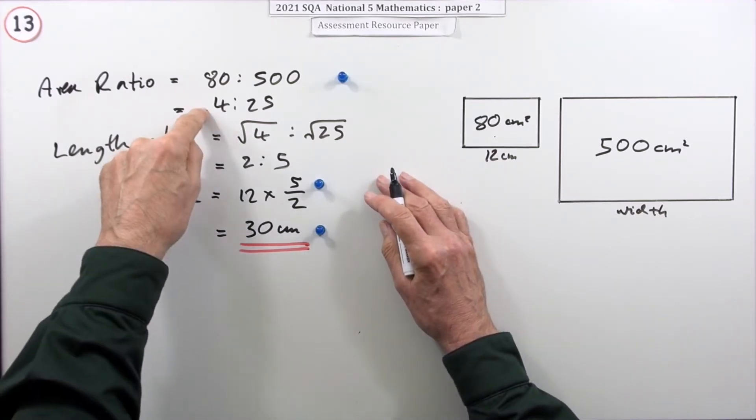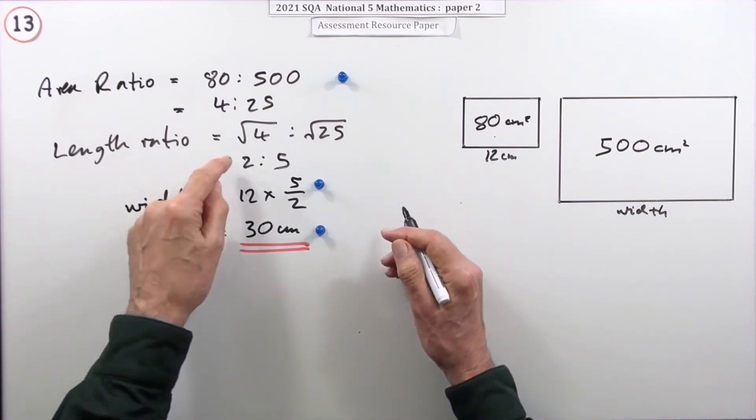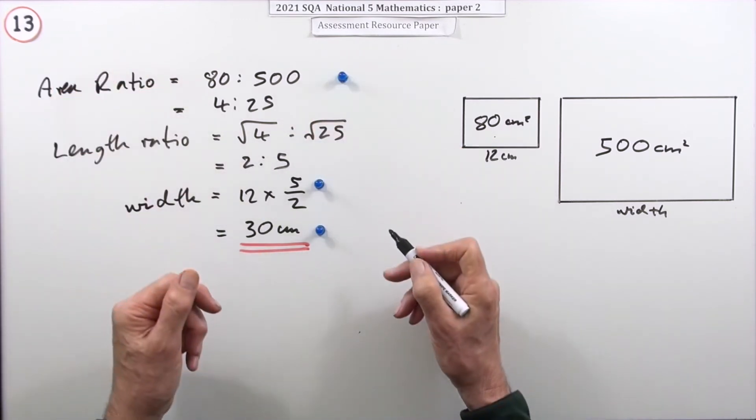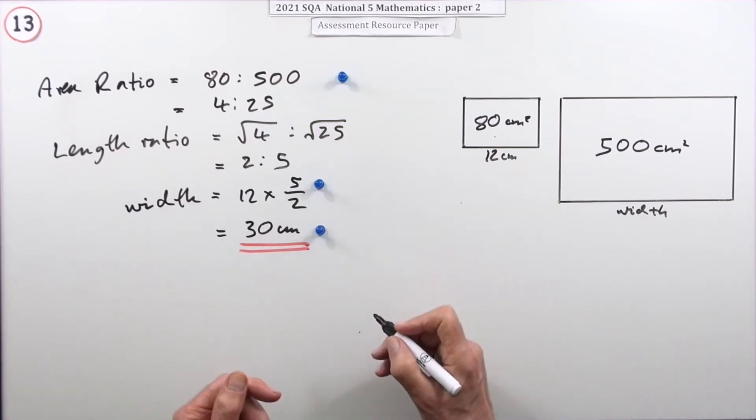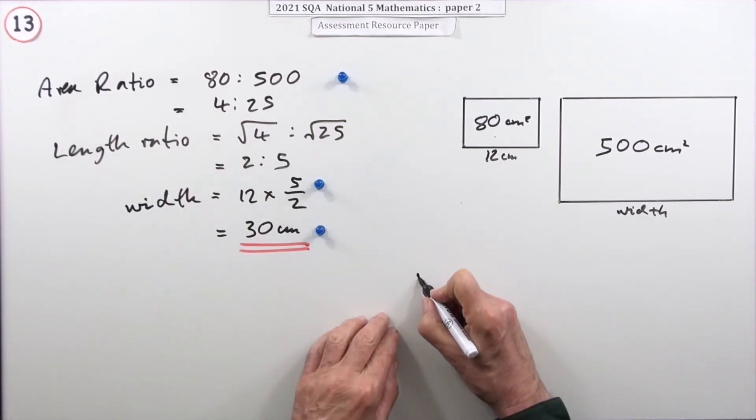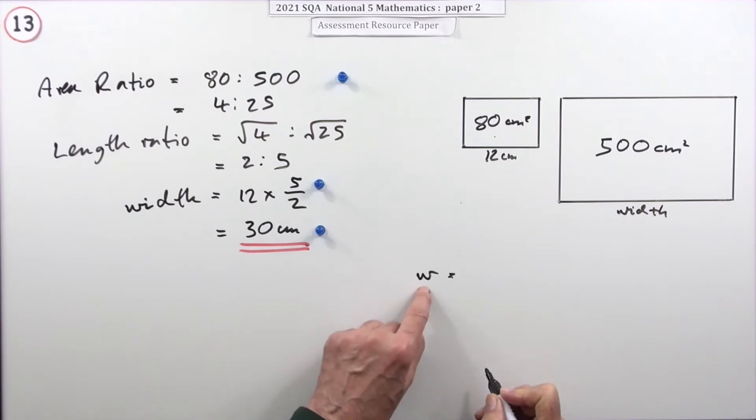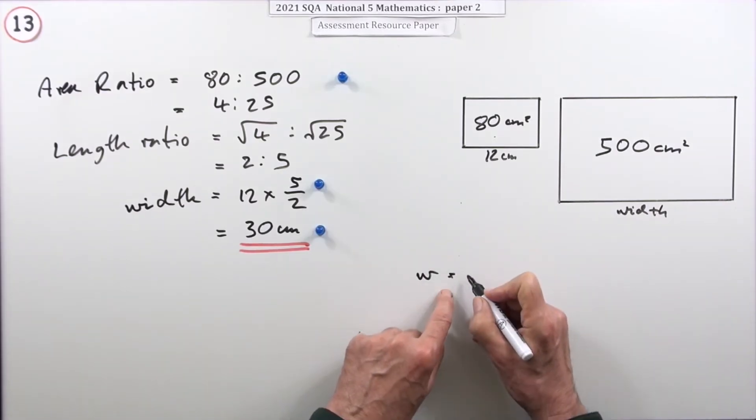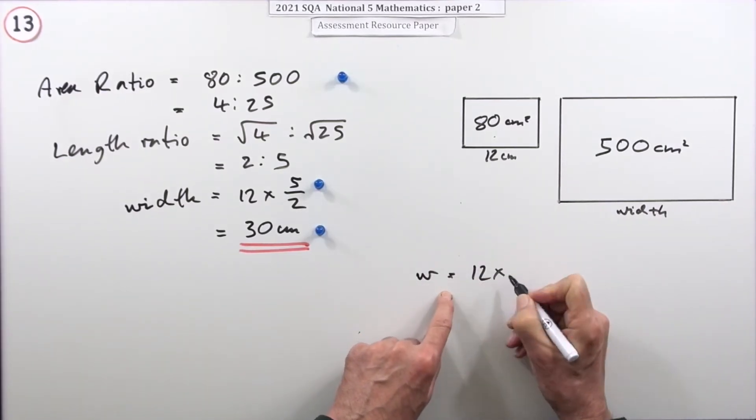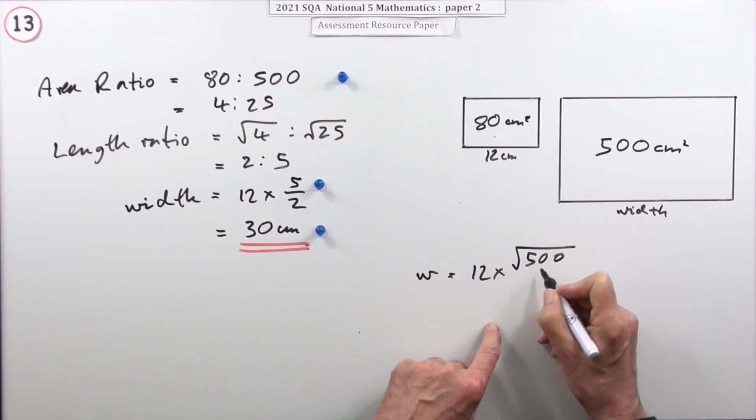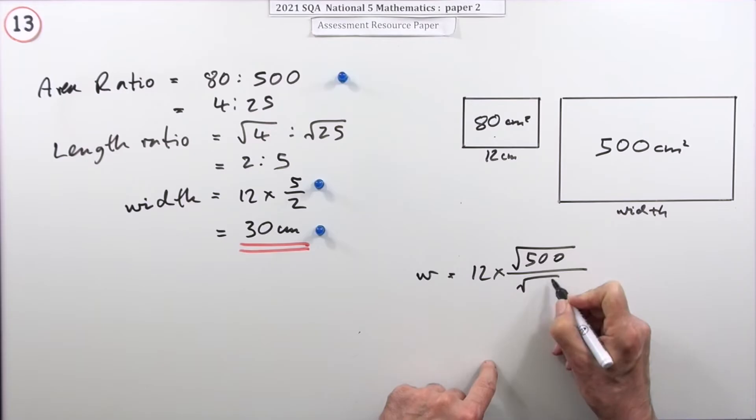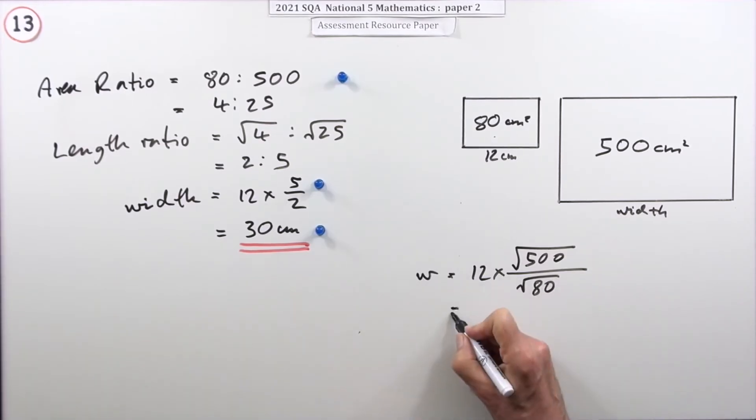In the marking scheme, of course, they didn't cancel it down because they didn't ask you to. They've just left it as 80 and 500, which you could do. If you just left it as 80 and 500, when it came to working out the width you would say it'll be bigger than the 12, so put the larger one on top and leave it as root 500 over root 80, which obviously must give you the same answer.